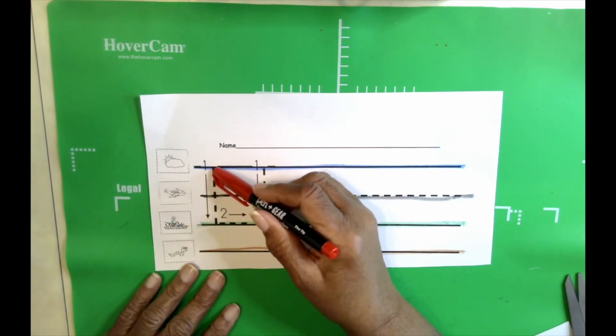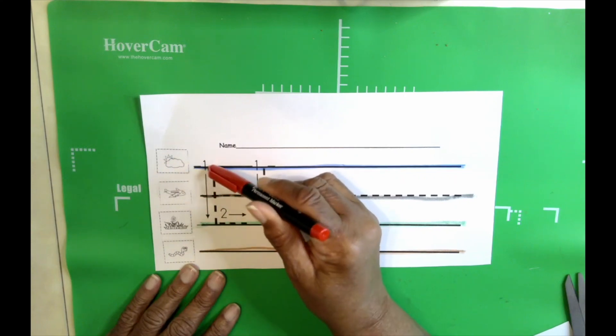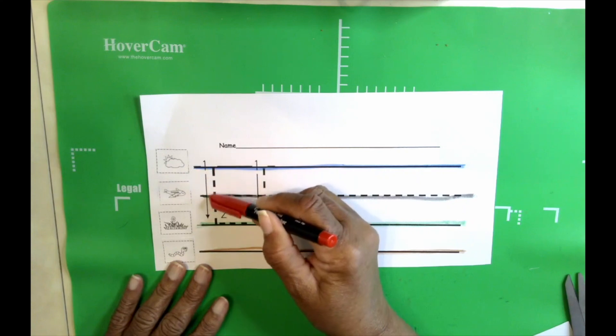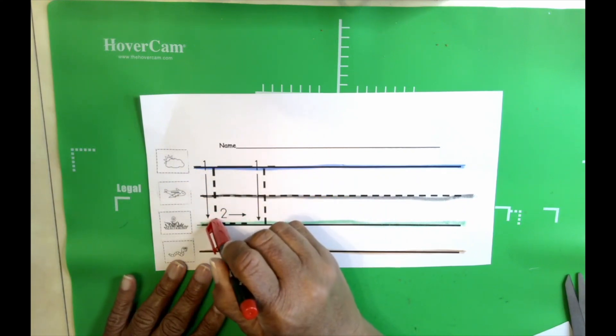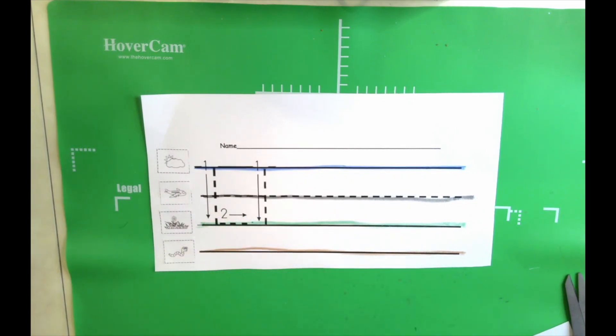Okay. So the uppercase L is a skyline letter. It starts right here at the skyline. And it moves all the way down to the grass line. And then you're going to move over. Watch me.